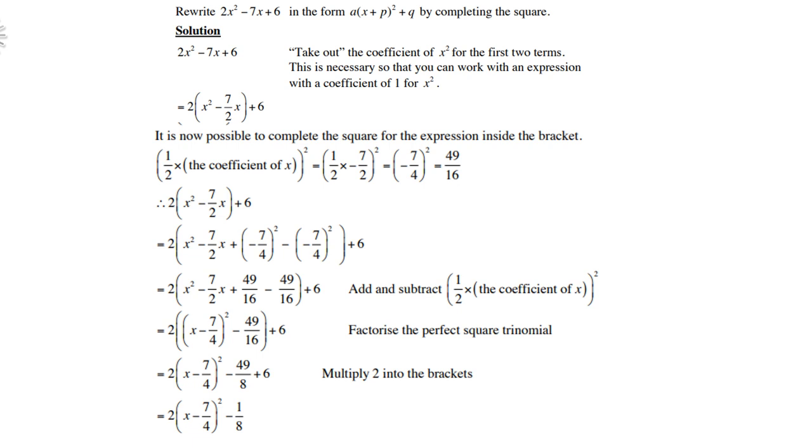So the final answer is 2(x-7/4)² - 1/8. So a is 2, p is 7/4, and q is -1.